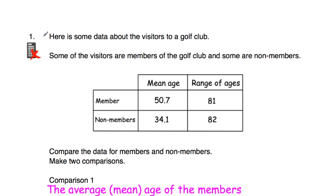Here's question number one. We have some data about the visitors to a golf club — some of the visitors are members of the golf club and some are non-members. For the members, the mean age is 50.7 years and the range of ages is 81 years. For the non-members, the mean age is 34.1 years and the range of ages is 82 years. The question asks us to compare the data for the members and the non-members and to make two comparisons.